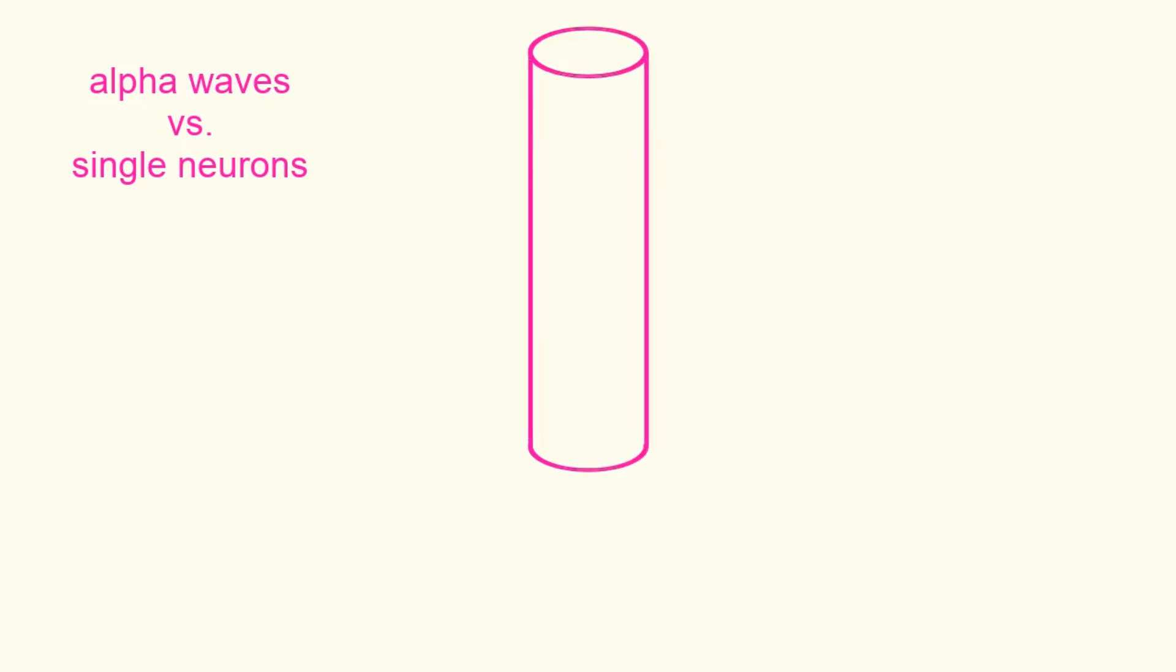Recordings from a single neuron in a cerebral column cannot reveal how the brain works, and such recordings cannot be used for testing the two-levels hypothesis. For that we must use alpha waves. This video explains why.